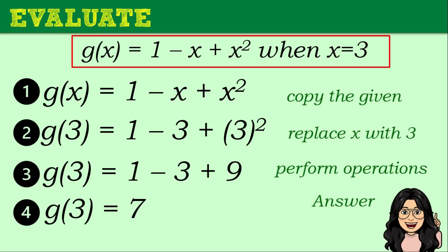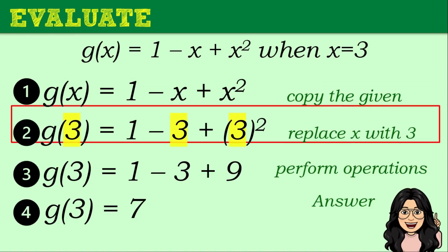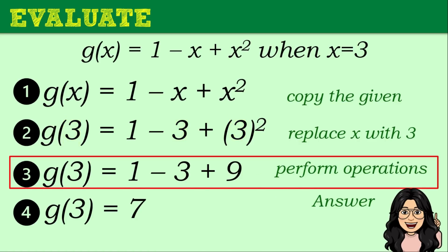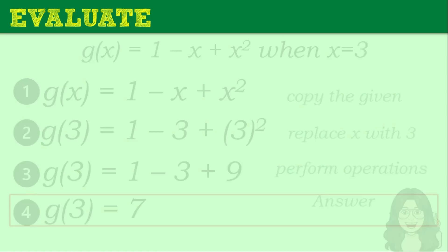How did we come up with that? From the given function when x is equal to 3, we copy the given, then we replace x with the value of 3. All the x in the given function is now replaced with 3: g of 3 is equal to 1 minus 3 plus 3 squared. We perform the indicated operations. 3 squared gives 9, so we have 1 minus 3 plus 9, which equals 7. The answer is g of 3 is equal to 7.